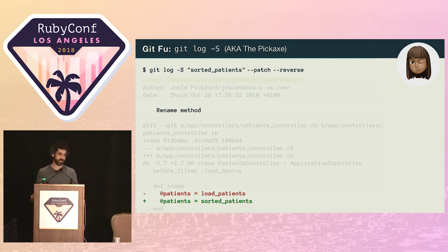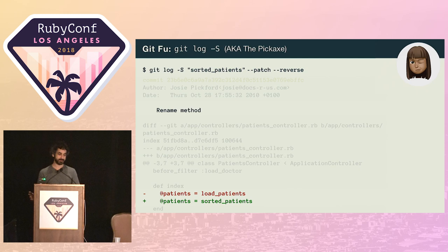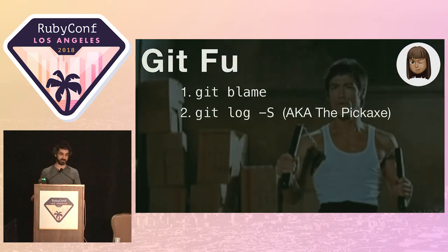Another dead end. It looks like Josie had had a change of heart about the method name. Sorted_patients is probably more intention-revealing than load_patients, but she's still no closer to solving the mystery. Not a problem, thinks Seema. She can rerun the search, but this time use the original method name.